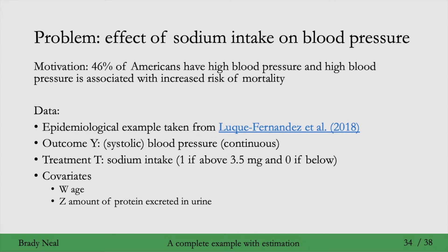And then in addition to the outcome and treatment, we have two covariates, W, age, and Z, which is the amount of protein excreted in urine. And this data is a simulation, so because it's a simulation, we actually do know the true ATE, which is 1.05. The range of values used in this simulation from Luque Fernandez et al. is biologically realistic.